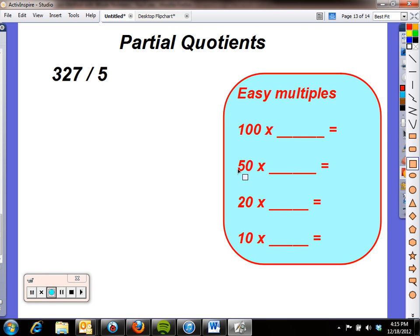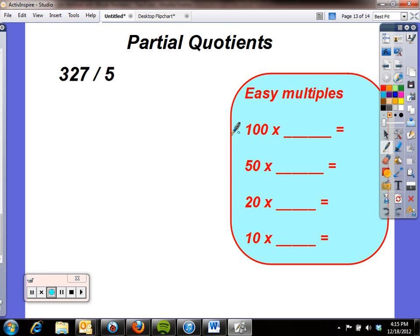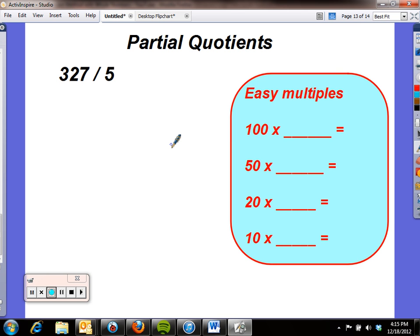I'm going to demonstrate the partial quotients algorithm, which is a way we're learning how to do division in fourth grade. I start with this problem: 327 divided by 5, and I write it like this.